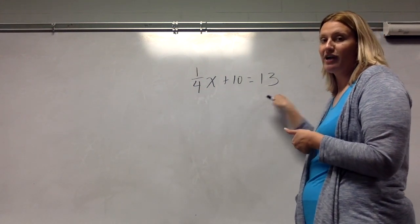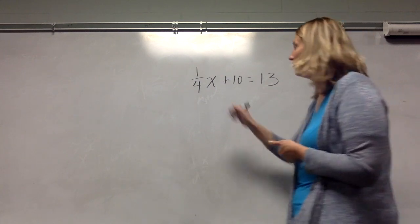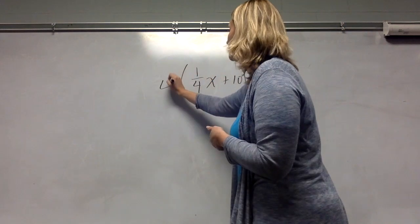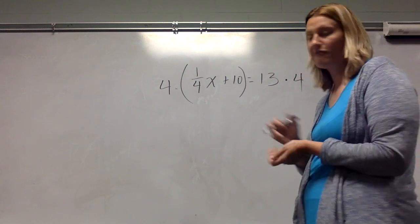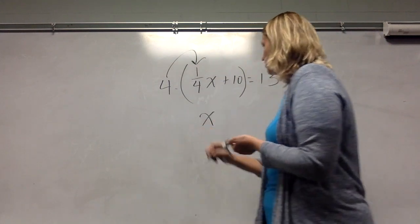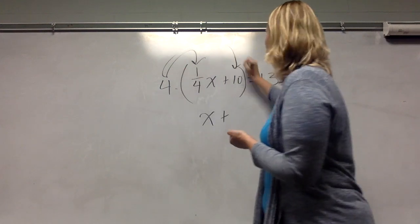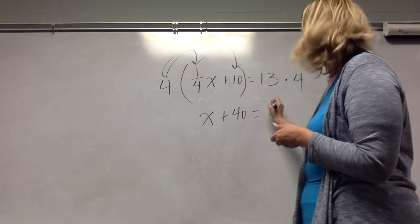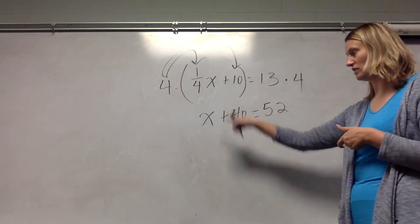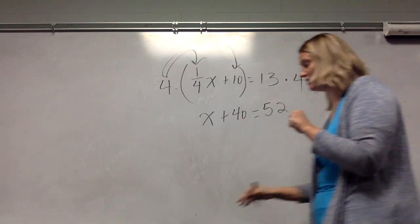If I were to do that here, I would go ahead and multiply by four because that's my only denominator. Now, even though these two aren't fractions, I still need to multiply by four. So I would, again, use the distributive property on this side, balance my scale, and multiply by four on that side. When I distribute, that gives me just x, that gives me 40, and 13 times 4 is 52. This now becomes a one-step that you can solve.